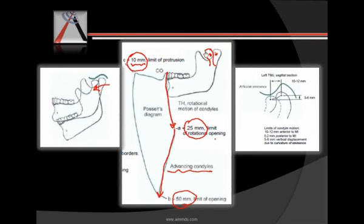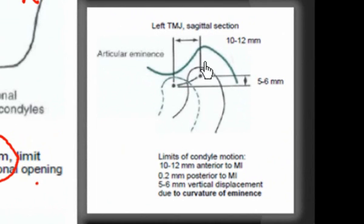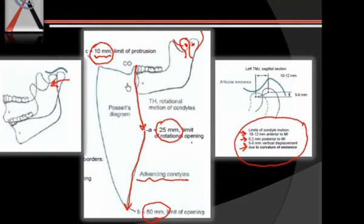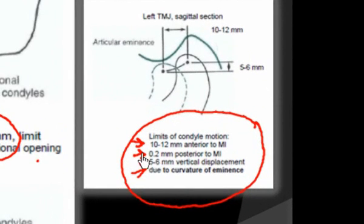When the condyle is shifting, we can see that the condyle can shift because of the laxity of the capsule. The condyle can shift posteriorly backwards approximately 0.2 mm, anteriorly 10 to 12 mm, and it can show a vertical displacement of 5 to 6 mm. Please make a note of these six values: 10 mm limit of protrusion, 25 mm limit of rotational opening, 50 mm total limit of opening, and condyle limits of 10–12 mm anterior, 0.2 mm posterior, and 5–6 mm vertical displacement.